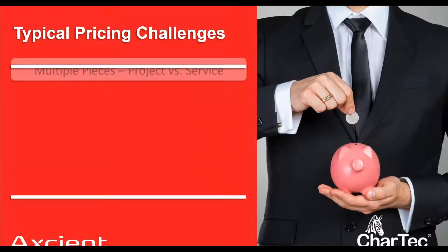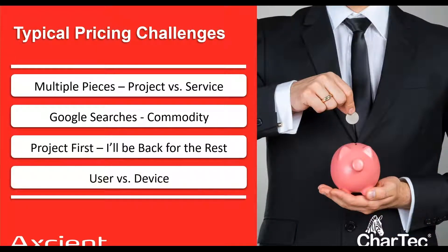I want to talk about pricing. There are a couple of challenges — having multiple pieces, selling a project and the services. Selling one thing is hard enough, but selling the project and the services means two sales and two sets of objections to overcome. I'm also not a proponent of line-iteming out proposals — that just commoditizes our offering and allows Google to take over.